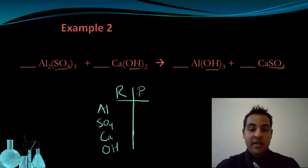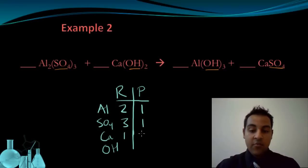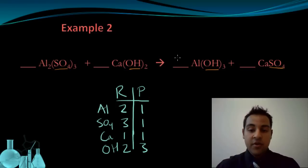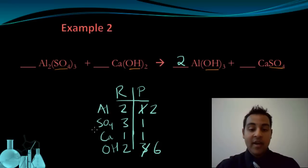I'm going to count the number on each side. I have two aluminums on the left and one on the right. I have three SO4 groups on the left and only one on the right. For calcium, there's one on the left and one on the right. For hydroxide, I have two and three. I'll start with aluminum — I need to multiply the product side aluminums by two. That's going to change my aluminum count to two, but it also changes my hydroxides on the product side: I will now have six hydroxide groups on the product side.